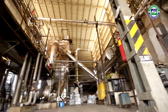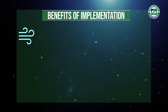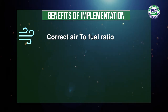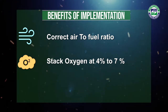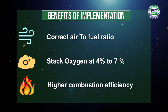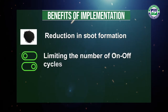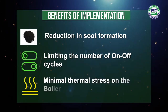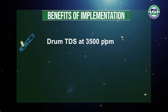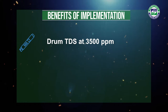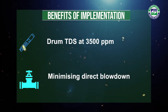The automation and control system provides many process-specific benefits: the correct air-to-fuel ratio is maintained, stack oxygen is maintained at the optimum level of four to seven percent, higher combustion efficiency is achieved, reduction in soot formation, limiting the number of on-off cycles, minimal thermal stress on the boiler, drum TDS maintained at an optimum level of 3,500 ppm, and minimizing direct blow down heat loss due to draining of blow down water.